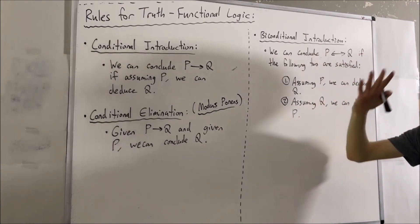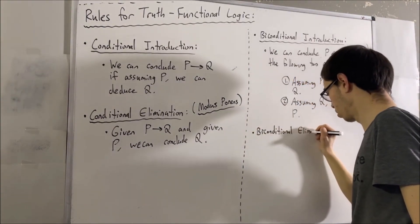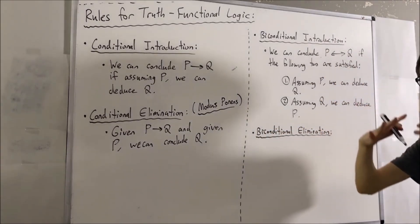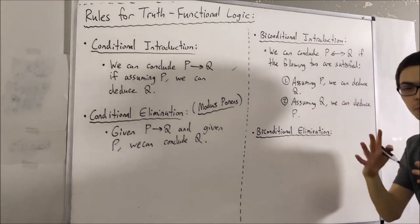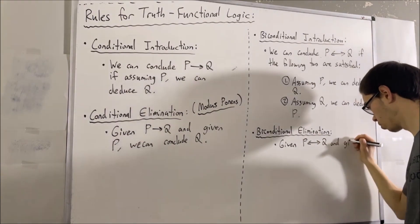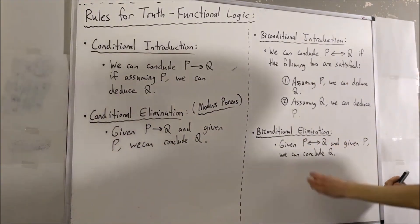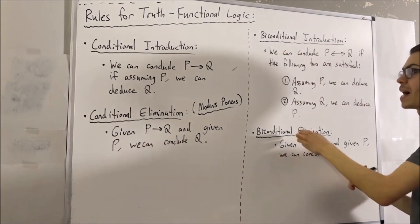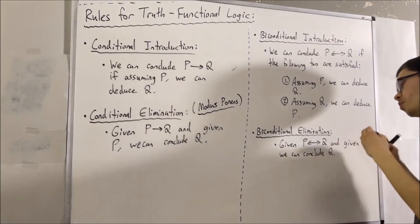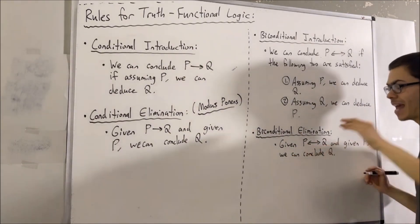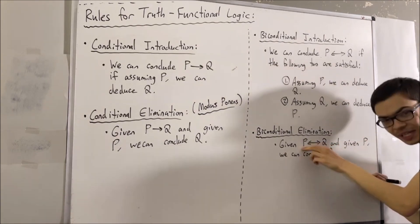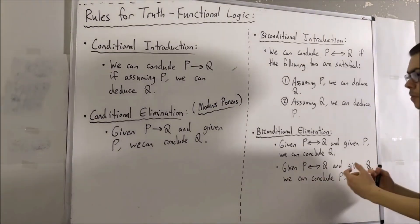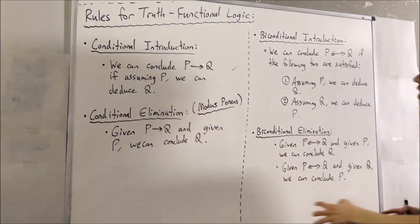Now let's talk about biconditional elimination. If we're given P if and only if Q and we're given P, then we can conclude Q. This is exactly the same thing as modus ponens. But because it's a biconditional, it works both ways — so in addition, if we're given P if and only if Q and we're given Q, then we can conclude P. That's the idea of conditionals and biconditionals.